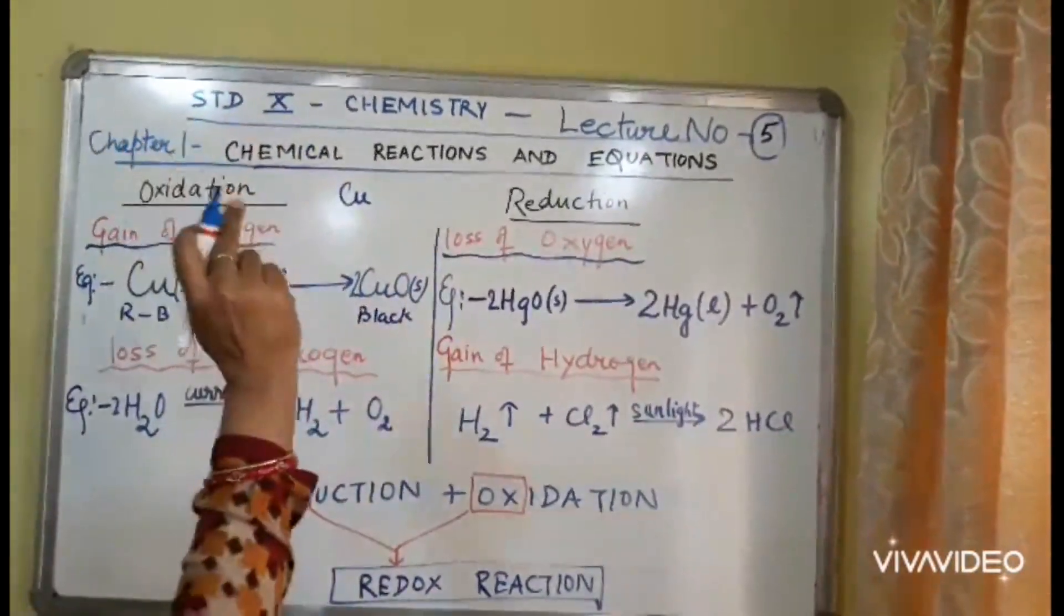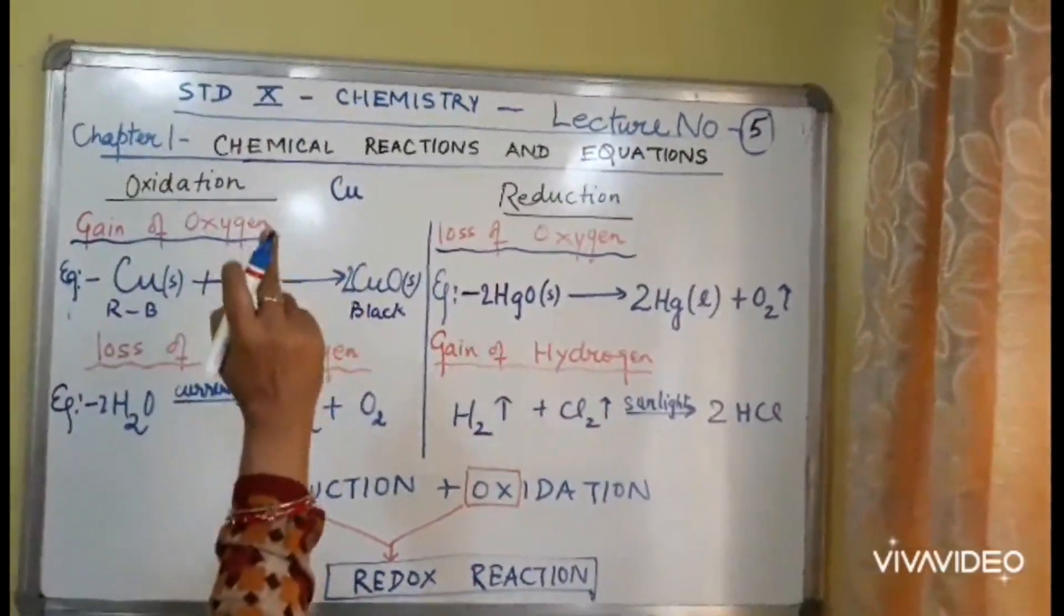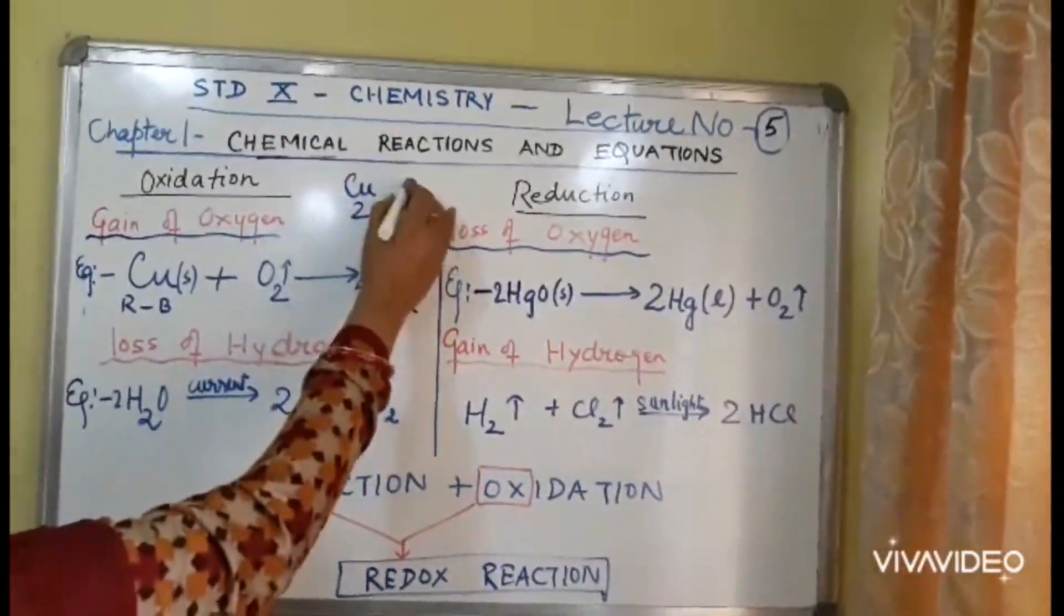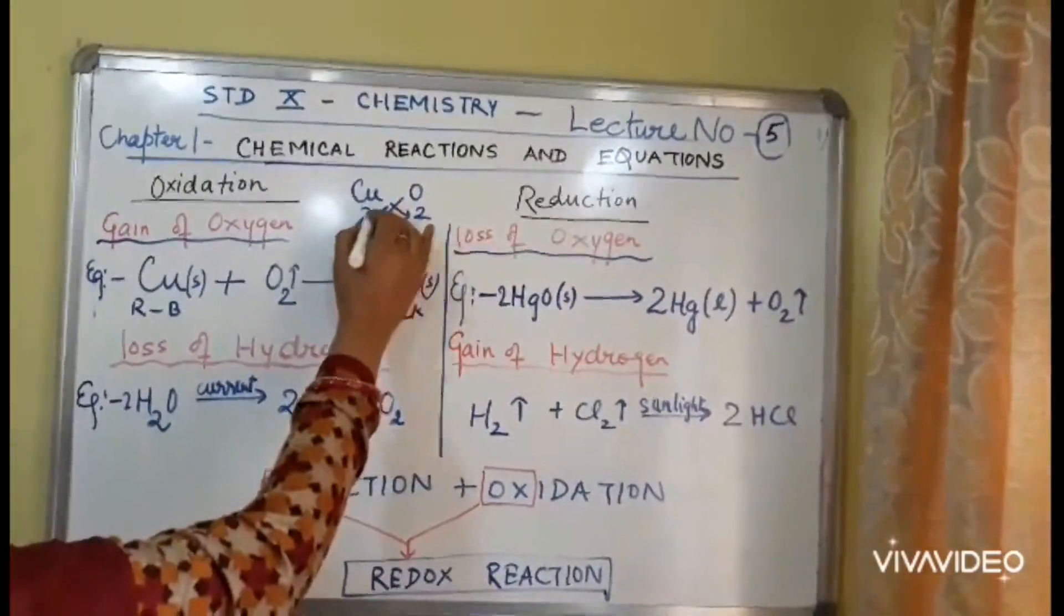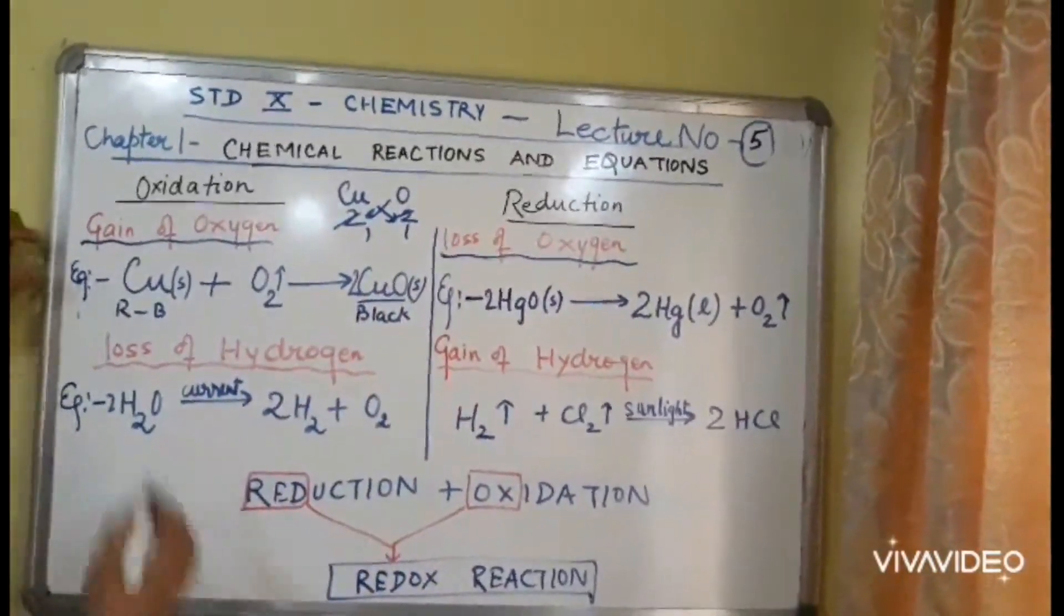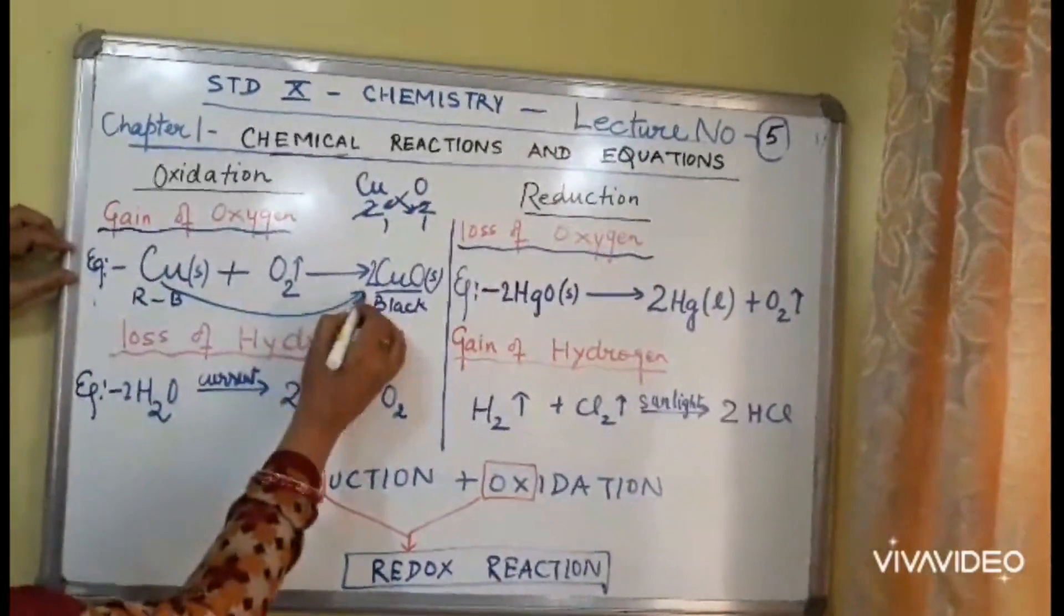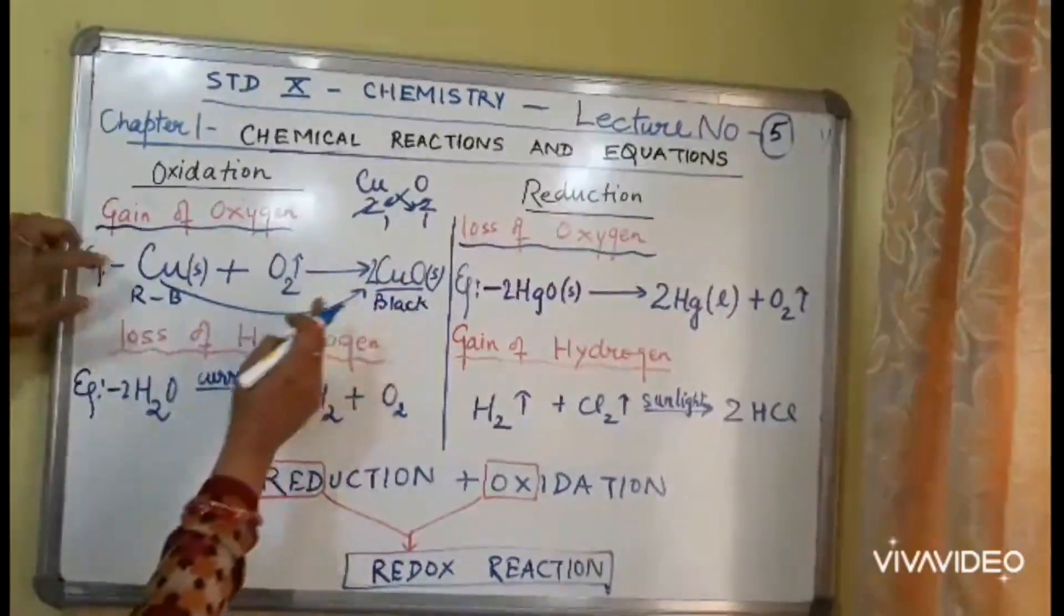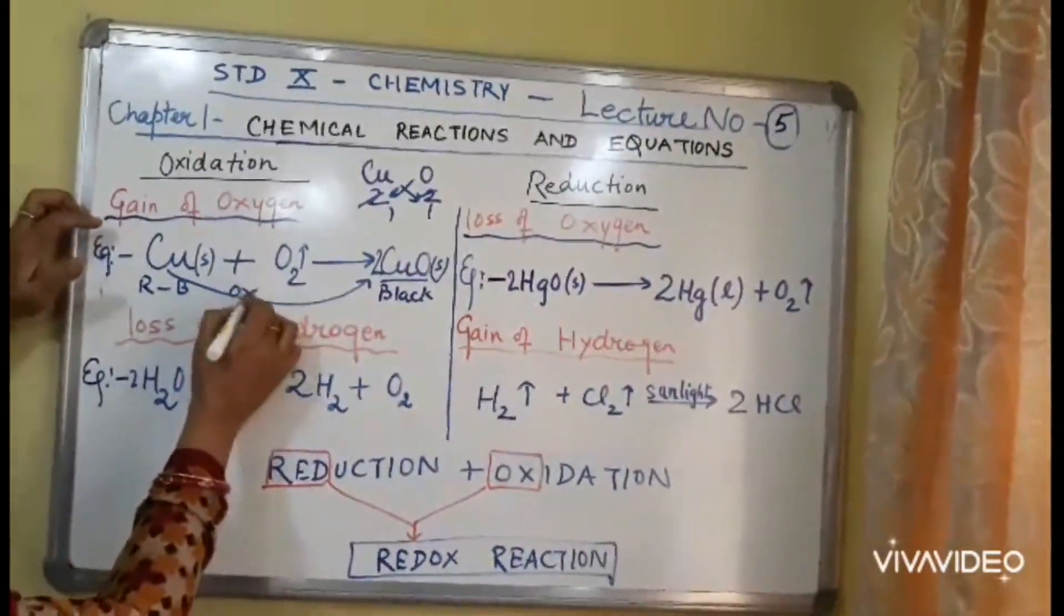Cupric, copper has two valences, 1 and 2, cuprous 1, cupric 2. Oxygen 2, the formula is CuO. Now since copper changes to CuO, there is addition of oxygen. So this is oxidation.